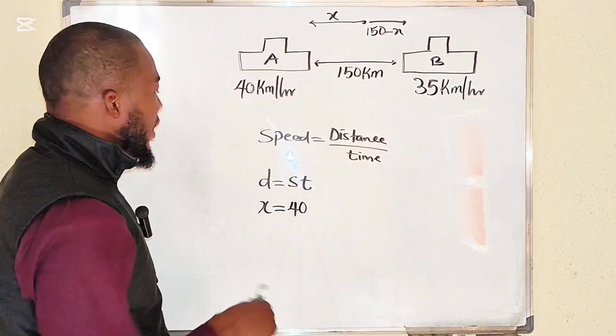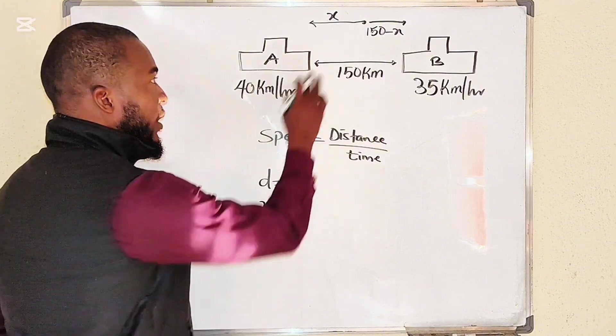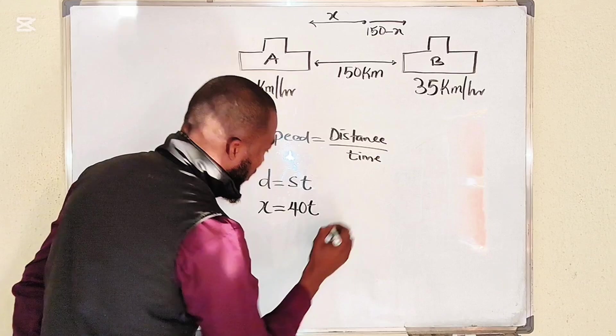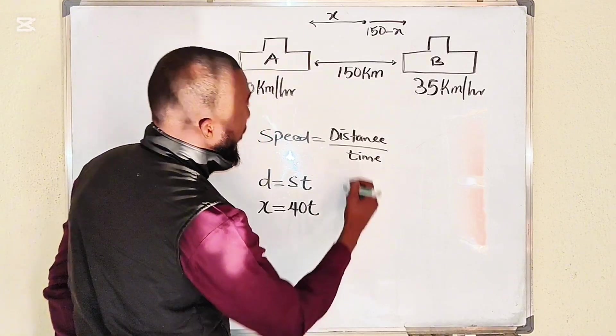Remember they have the same time. The time they will take to meet at this point will be the same, so let me leave it as t. Then the other car would be 150 minus x equal to 35t. So we can solve these two equations simultaneously.